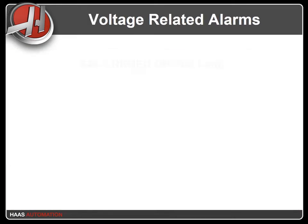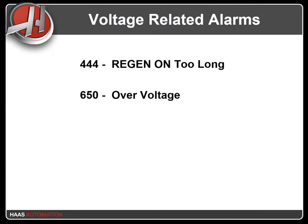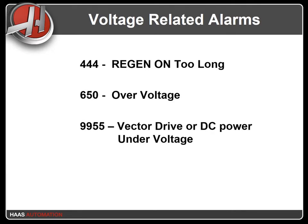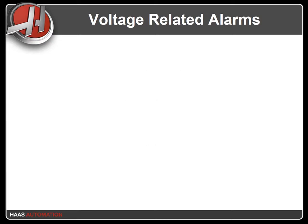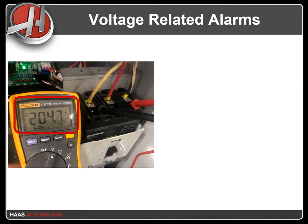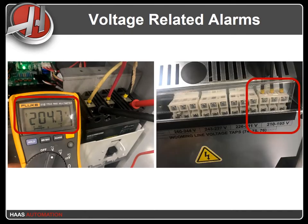Alarms 444 regen on too long, Alarm 650 over voltage, and Alarm 9955 vector drive or DC power under voltage are most of the time caused by issues with the incoming AC power or an incorrectly tapped transformer. The first thing to do for a voltage-related alarm is to measure the incoming AC voltage — measure leg-to-leg and leg-to-ground. Make sure that the transformer is correctly tapped based on the incoming power. Lines connected to the incorrect tap cause either too high a DC bus or intermittent low voltage conditions.